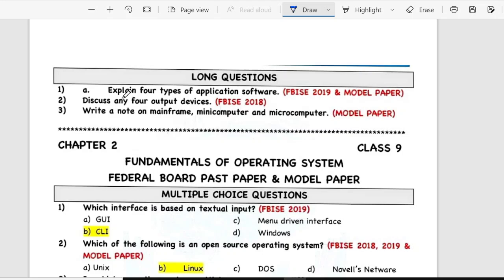Long question in Chapter 1 is explain four types of application software, discuss any four output devices, write a note on mainframe, minicomputer and microcomputer.